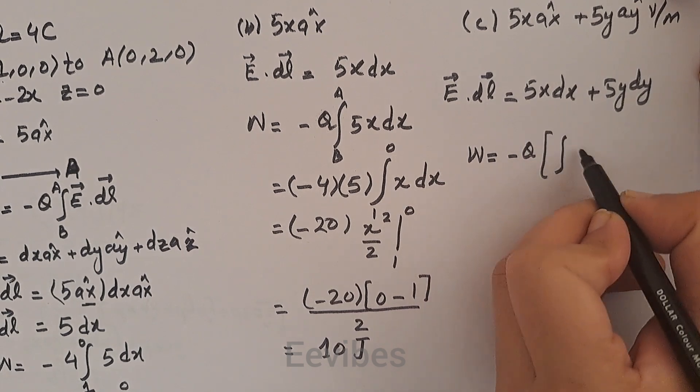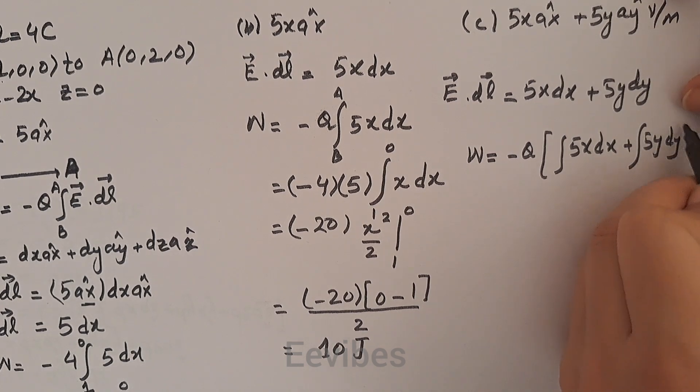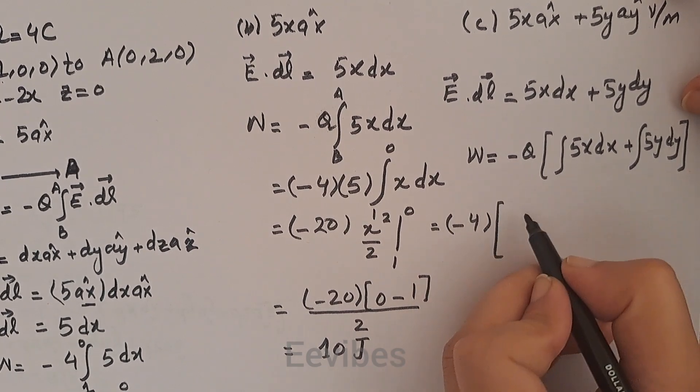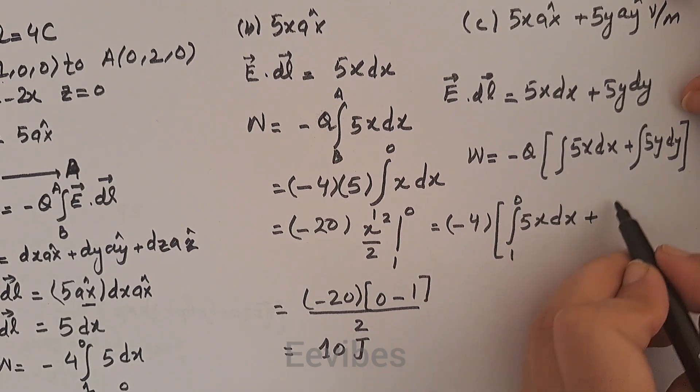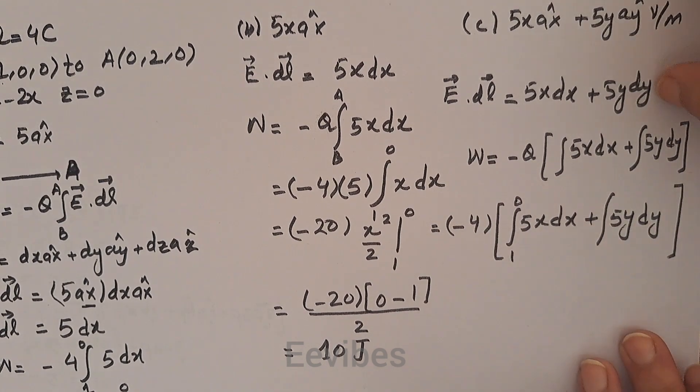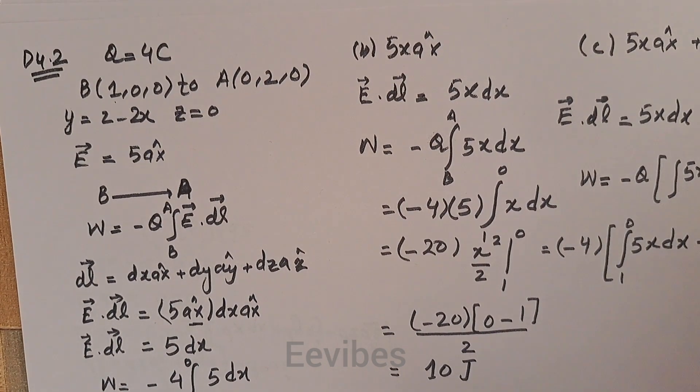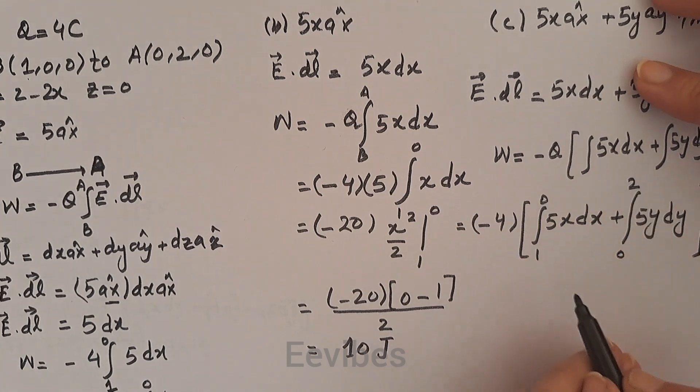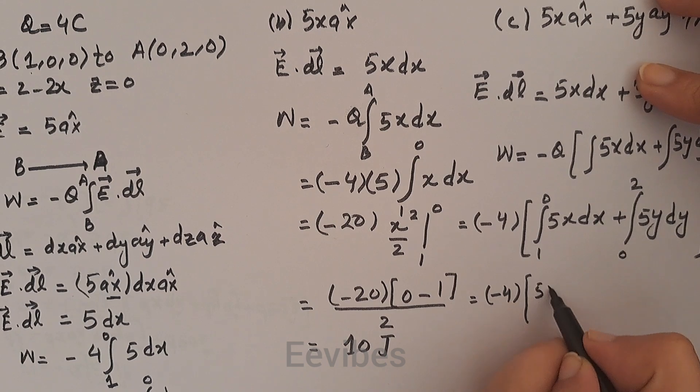-4 coulombs of the charge, then 5x dx. The limit of x is from 1 to 0, plus integral of 5y dy. We know that the limit of y, since y is varying from 0 to 2 in the expression, so we will write it as 0 to 2.